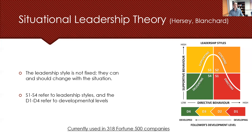D1 through D4 at the bottom of the figure follows a developmental continuum. D1 starts where individuals have low competence and low commitment — for example, new teachers who aren't well-versed on policies and procedures and may not be confident or competent in facilitating their classrooms. D2 are individuals who are somewhat competent but low in commitment, such as a teacher who has lost initial excitement from a negative experience.